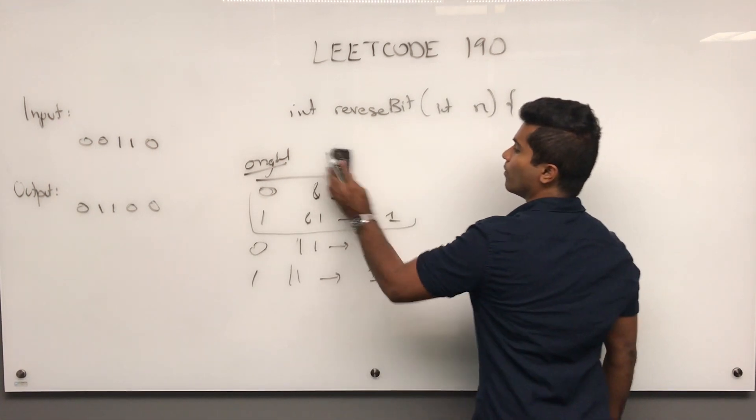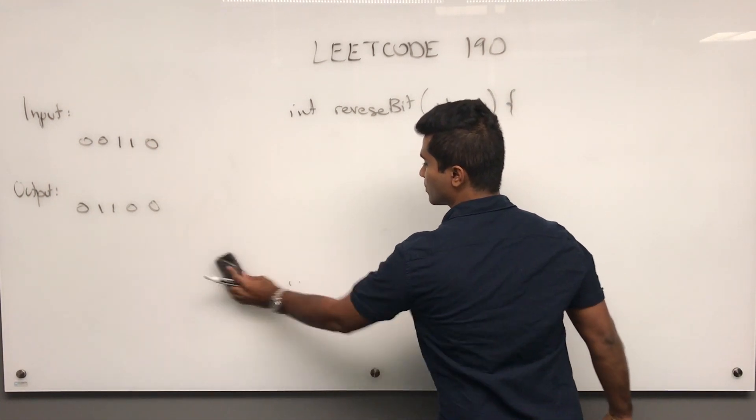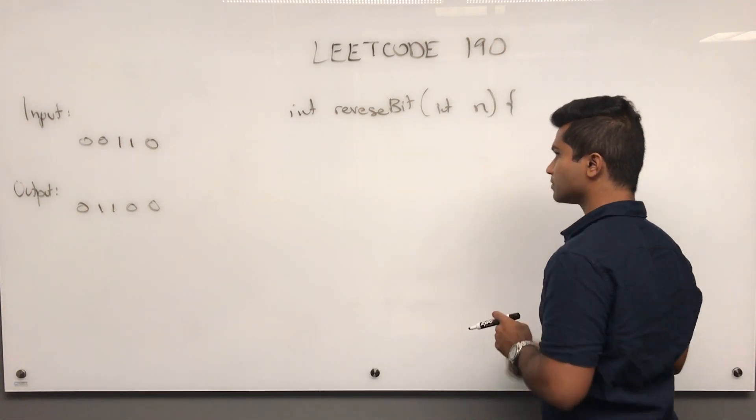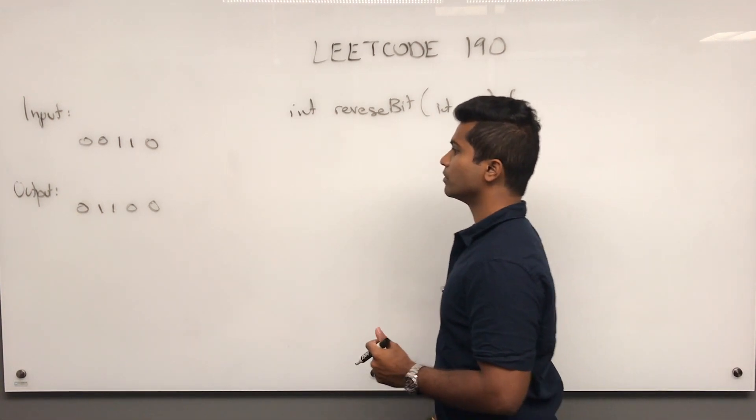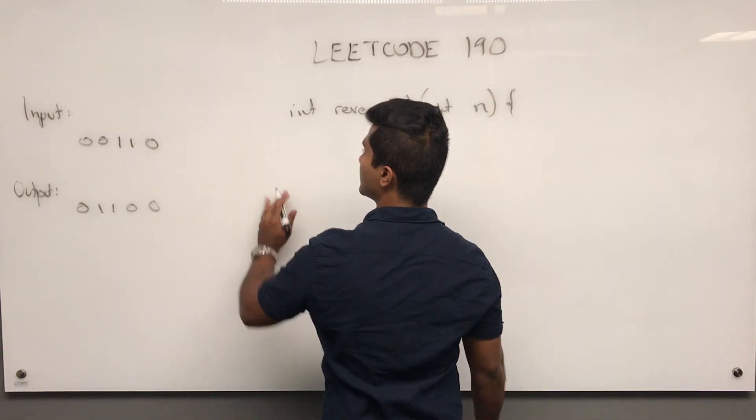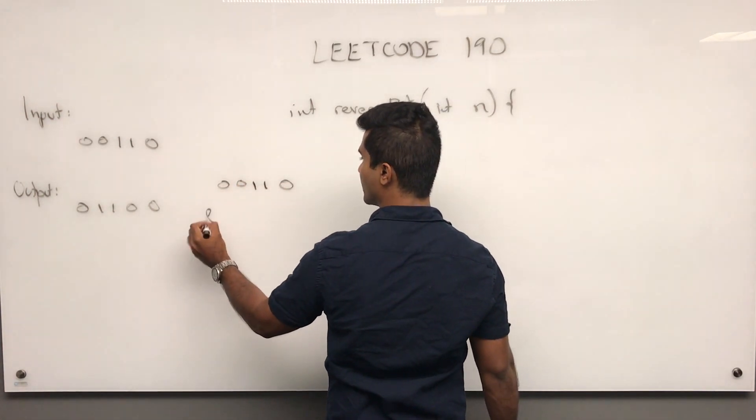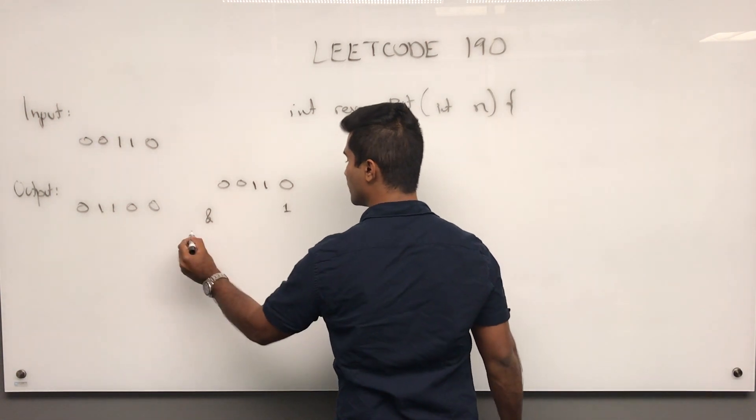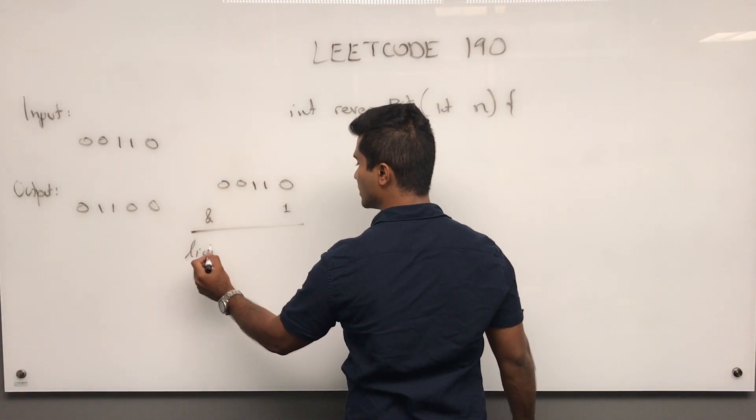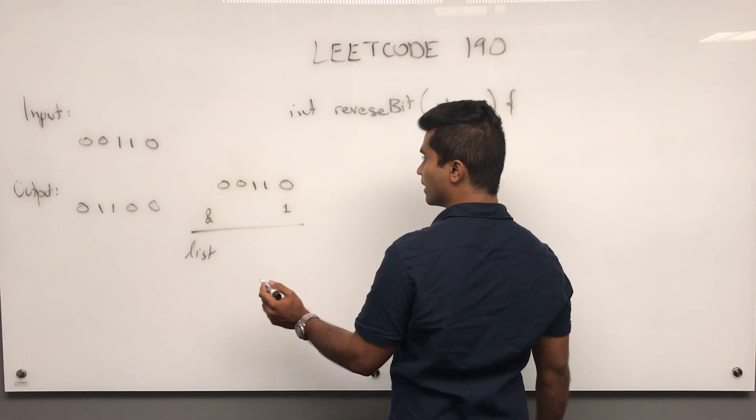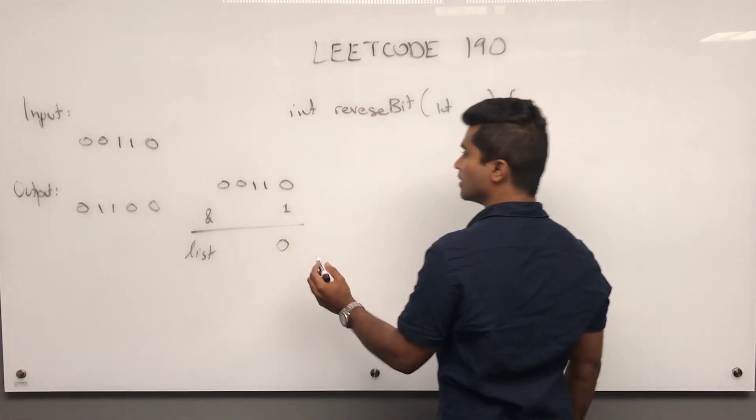Now let's look at how I'm going to store each one. We have 0, 0, 1, 1, 0, and we do AND 1. My list gets back a 0. Since I'm done with the rightmost bit, I push this over.